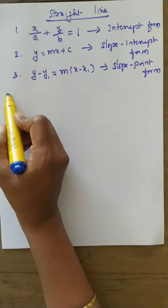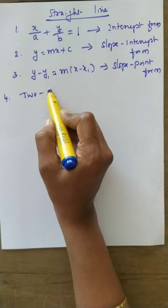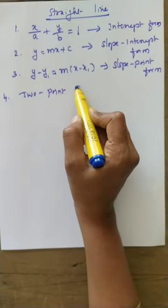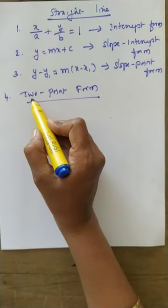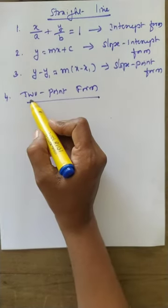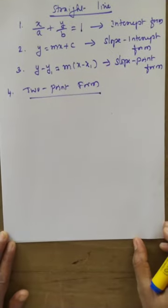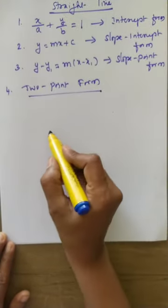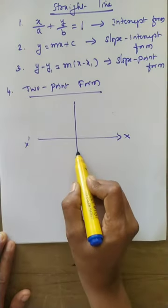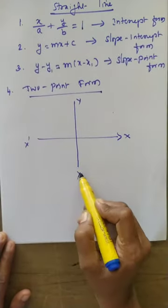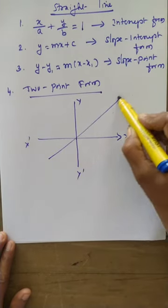Fourth one: two point form. The name itself suggests there are two points. Take x axis, y axis, and take a straight line which passes through two points.